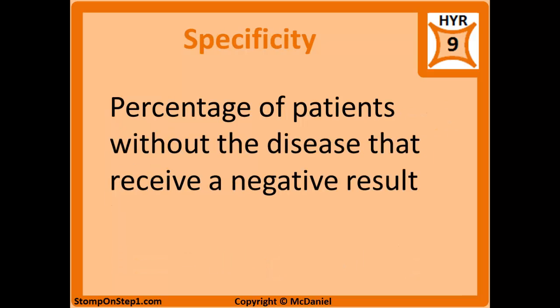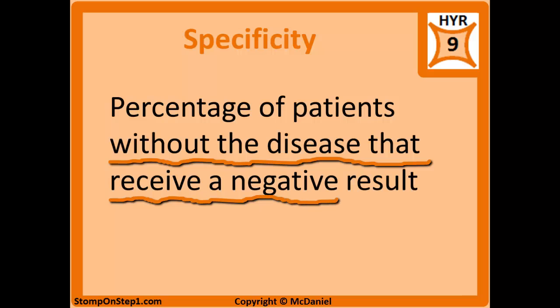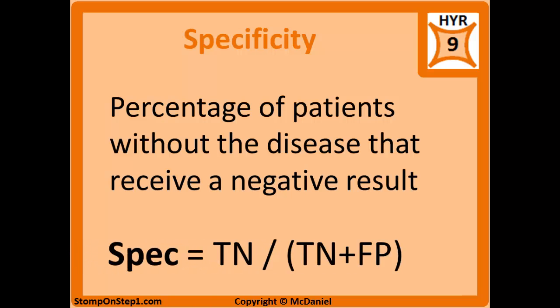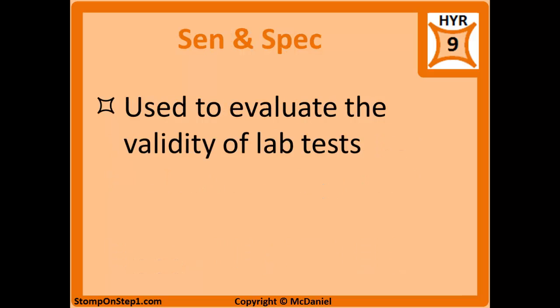Specificity is the proportion of patients without the disease that receive a negative test — also the percentage chance that the test will correctly identify a person who is disease free. The formula for that is true negatives divided by true negatives plus false positives.